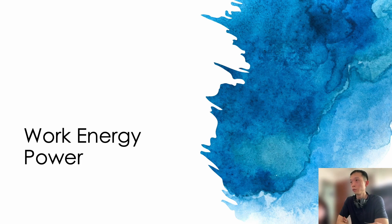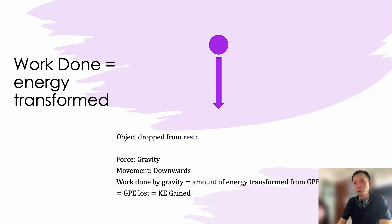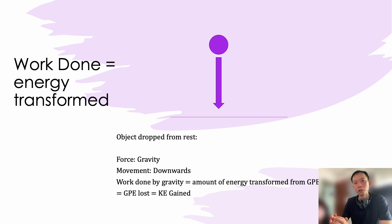In this video we'll be going through two key concepts in the chapter on work, energy and power. For the first concept — work done — most of you would think of it as force times distance moved in the direction of the force. This is the official definition and it's what you should quote when asked directly in the question. However, it's not very useful for understanding what work done means or how to use the concept.